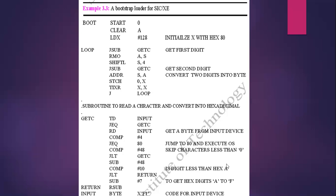For reading content from memory, we call a supporting subroutine called getc — 'get character.' We call this subroutine two times: the first time we read the first character, the second time we read the second character. We then need to add these two values — whatever hexadecimal result we generate from the first and second read operations — and combine them as one byte of information. The two digits are converted into one byte, and that byte is loaded at a specified location starting at 80, then 81, then 82, and so on.